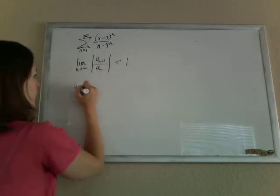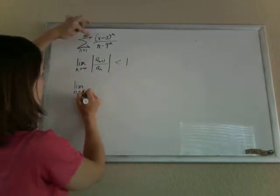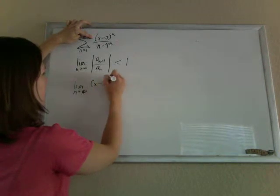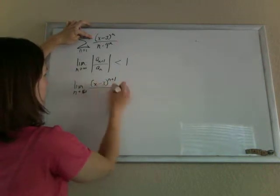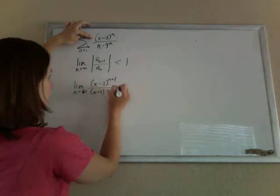So what we're going to do is we're going to plug in n plus 1, so we've got x minus 3 to the n plus 1 over n plus 1 times 4 to the n plus 1.